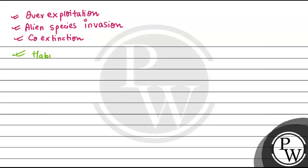Here we have been given a diagram about the original habitat which has fallen into smaller patches. So the ecological term which we will use is Habitat Loss and Fragmentation. Now, what is Habitat Loss and Fragmentation?